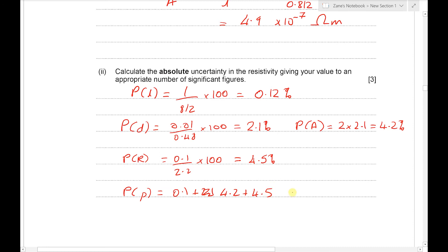So there we get 8.8% or maybe 9%. We're not too worried. Again, no more than 2 significant figures there. Finally, to find the absolute uncertainty in the resistivity